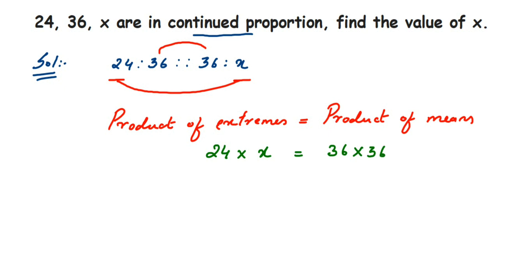Now here we have to find out the value of x, and you can see that it's like an equation here. We have to find only x here, so I don't want 24 on this side. I'm going to transpose this to the other side, so from here we'll get x is equal to 36 multiplied by 36 divided by 24.